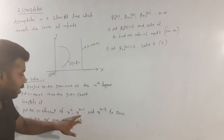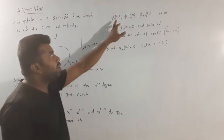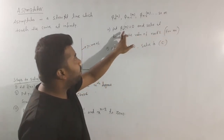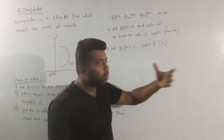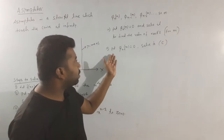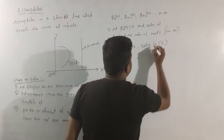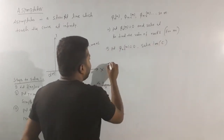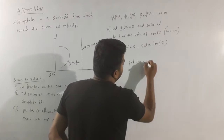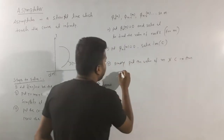Put the coefficient of x to the power n, x to the power n minus 1, and x to the power n minus 2 equal to 0, and then name them phi_n(m), phi_{n-1}(m), phi_{n-2}(m), and so on. Then put phi_n(m) equal to 0 and solve it. Then solve for c. Finally, put the values of m and c in the straight line equation.